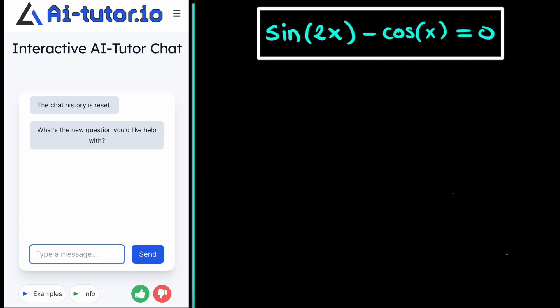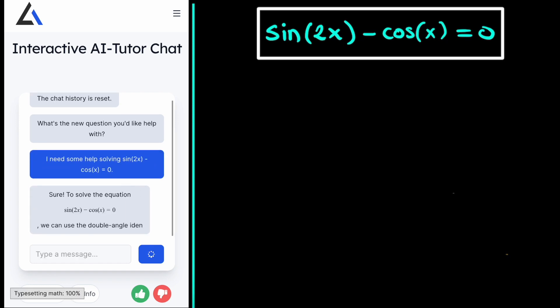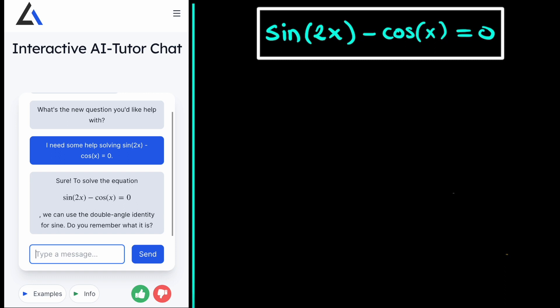We need to find a specific angle x for which the sine of 2 times this angle minus the cosine of this angle is equal to 0. Now let's say that you don't have a clue of how to start this exercise. Then you can just ask the AI Tutor to help you. It will respond by stating the equation such that you know that you've put in the right equation, and it says that we need to use the double angle identity for the sine and it asks us if we remember what it is.